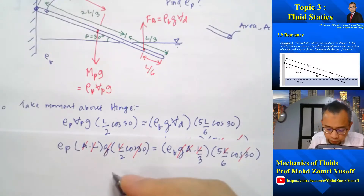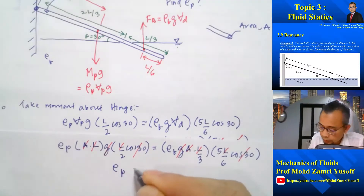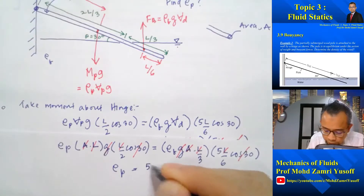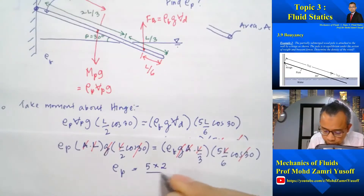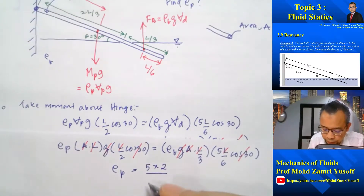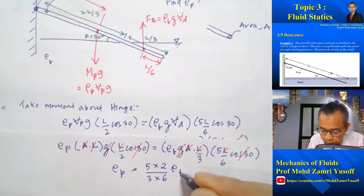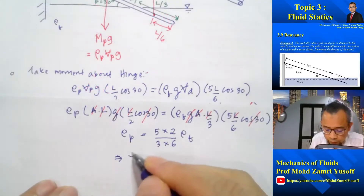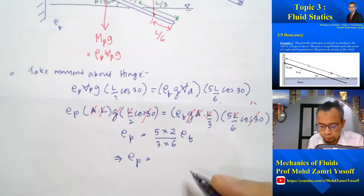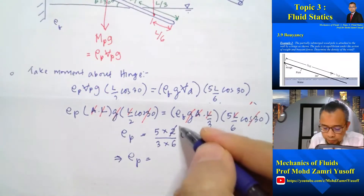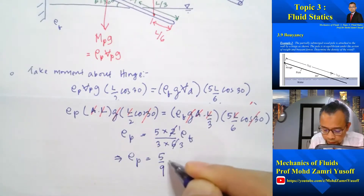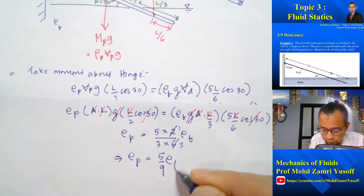After cancellation, we get: ρ_pole = (5×2)/(3×6) × ρ_fluid, which gives ρ_pole = 5/9 × ρ_fluid.